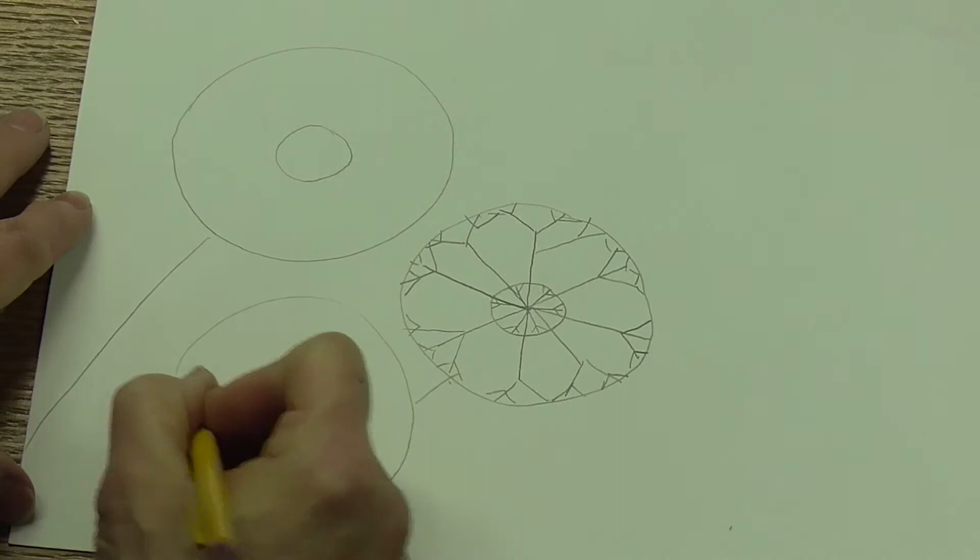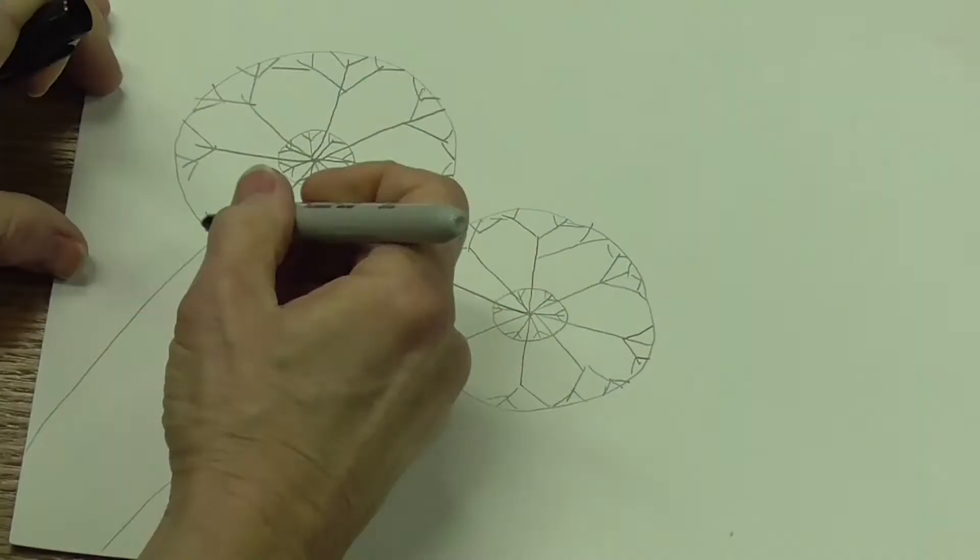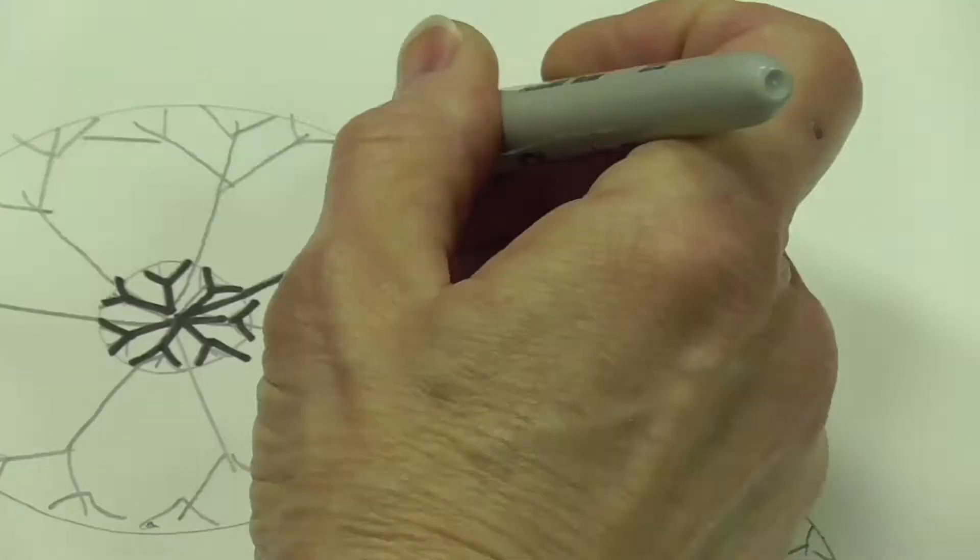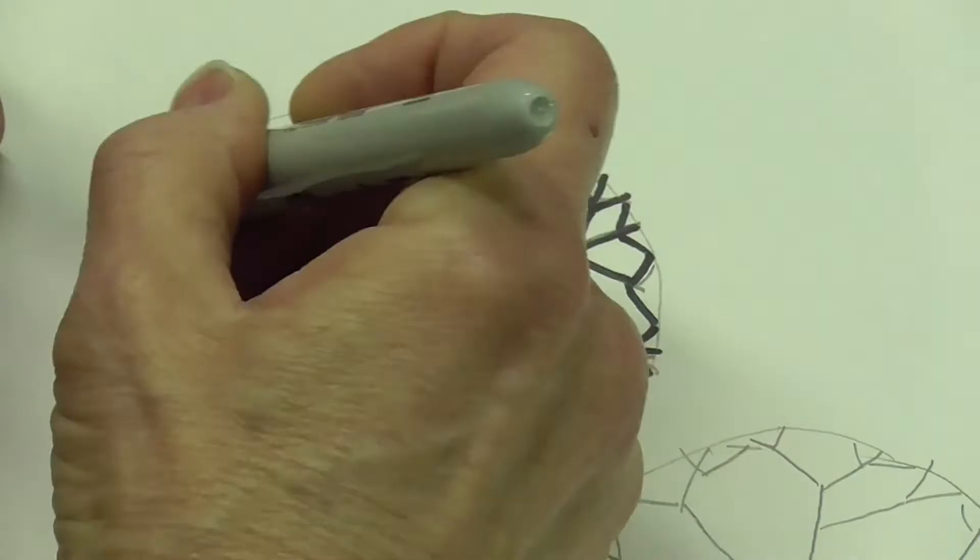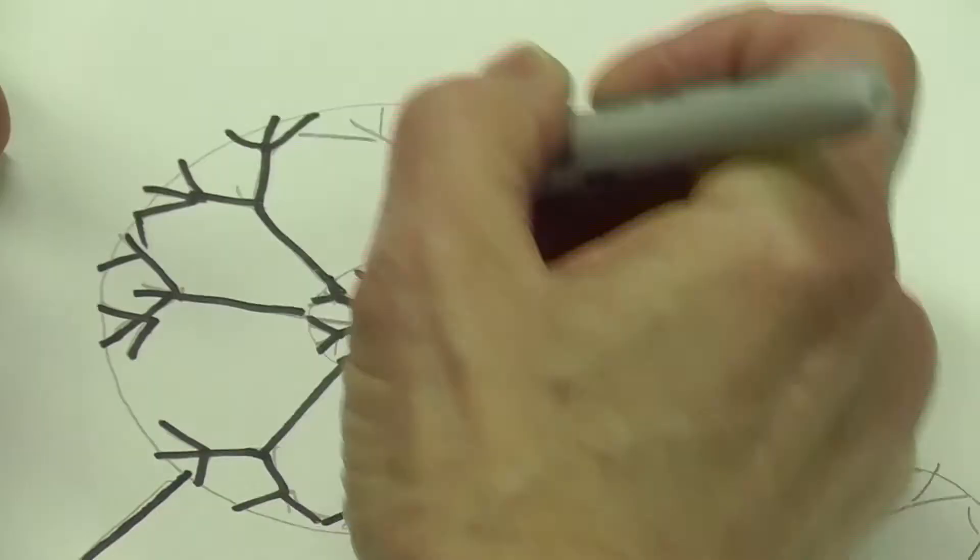Now you want to find a permanent marker like a Sharpie and go over all of your lines except for the outside circles. We're going to leave that alone because in the end we're going to erase a lot.